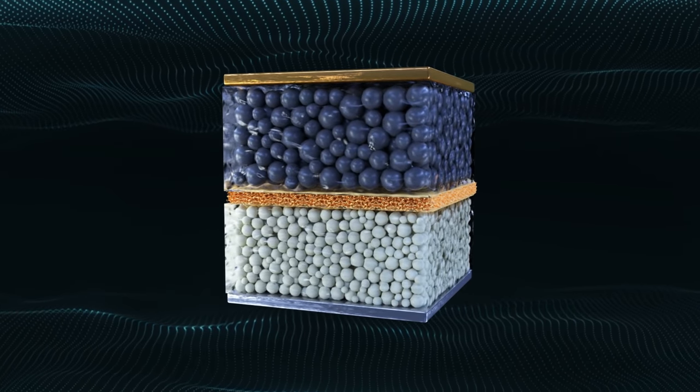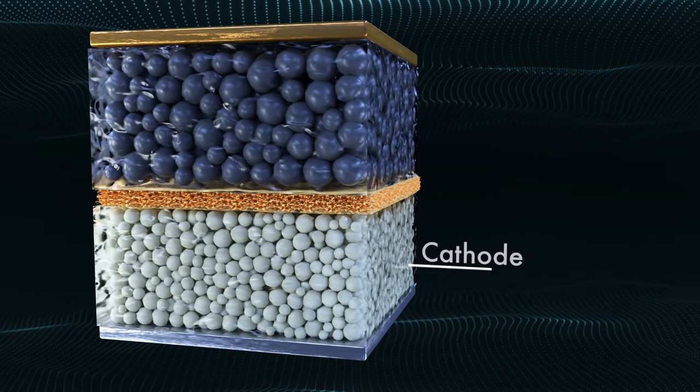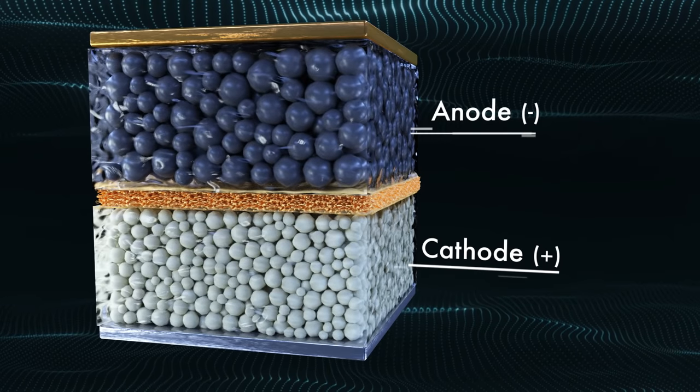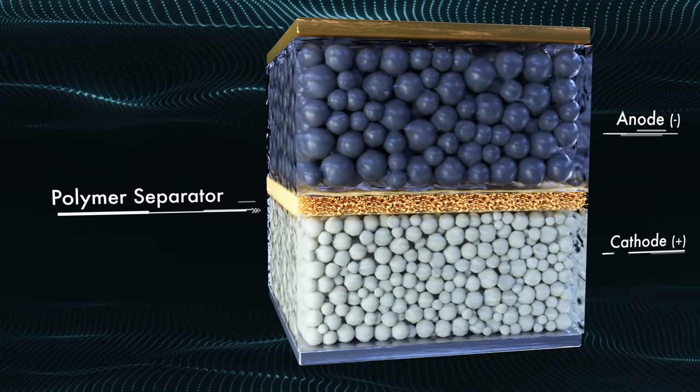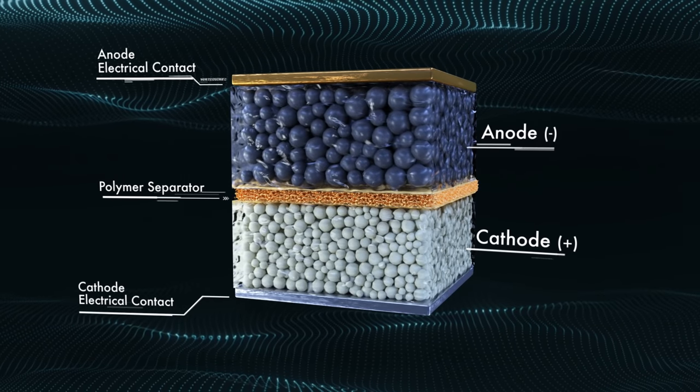A conventional lithium ion battery cell consists of three main layers: a positive electrode or cathode, a negative electrode or anode, a porous polymer separator that keeps the electrodes apart, and two electrical contacts, one at each electrode.